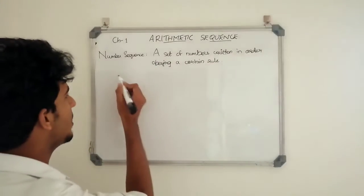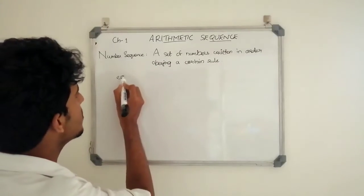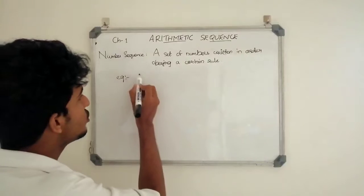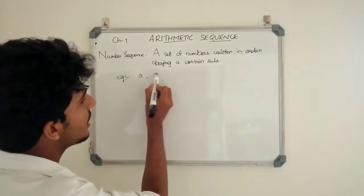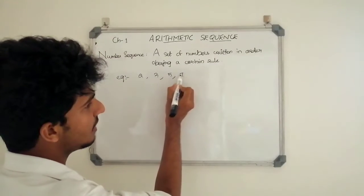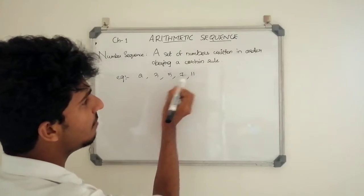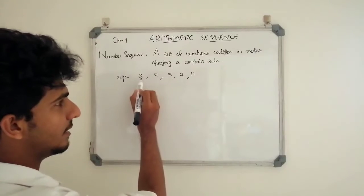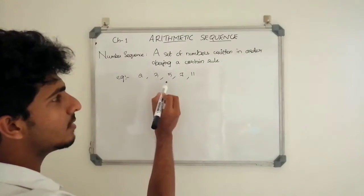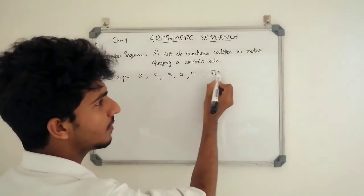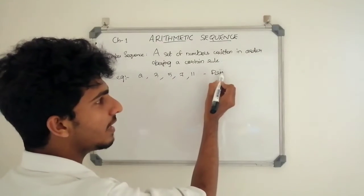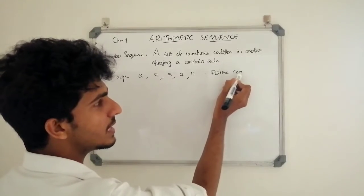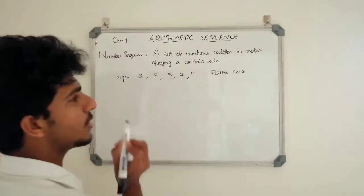Let's do an example: 2, 3, 5, 7, 11. In this case, if you have an order, this is the main rule — these are the prime numbers. This is a certain rule. We have a number sequence of prime numbers.